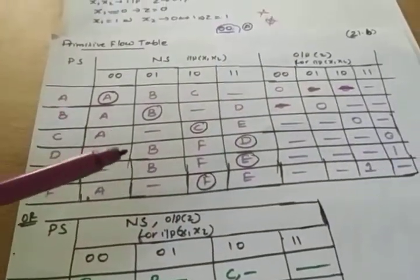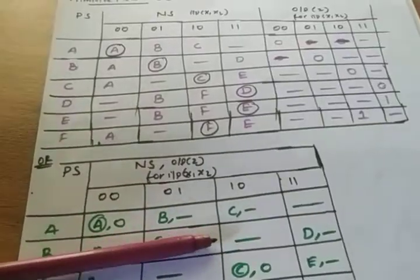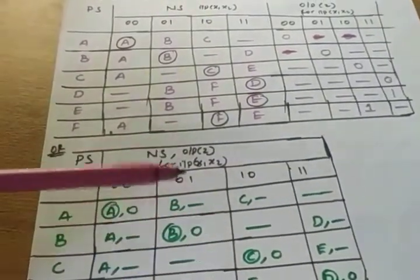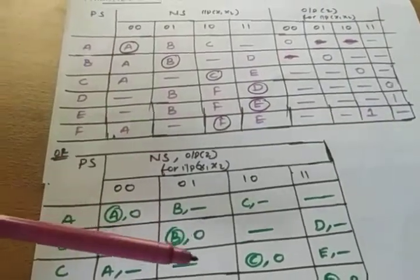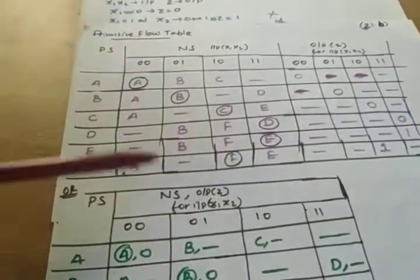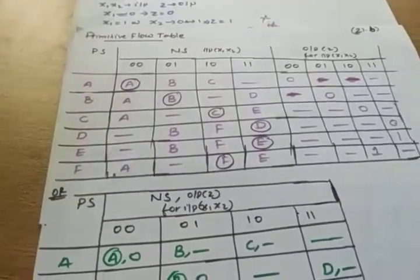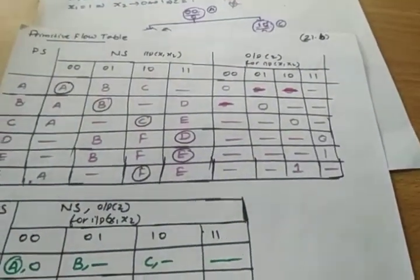Both representations are correct. In university questions, sometimes they ask for one kind of table and sometimes the other, or they give you one kind and ask you to find the logic diagram. So these are the two ways of representing the primitive flow table. After the primitive flow table, the next step is reduction of states, which we will discuss in the next lecture.